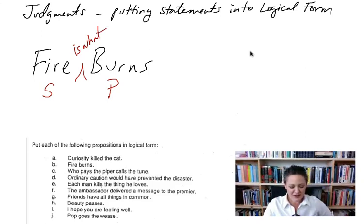Alright, so now you have a list here of other statements, propositions that don't have a copula. I would like you to do the same thing that I did and fill them in. Now there are some difficult ones. Let's look at these. Who pays the piper, calls the tune. You have to ask, is this talking about a person, a place, a thing? Ordinary caution would have prevented the disaster. Hmm. Is what? Is how? Each man kills the thing he loves. So I'm going to leave this open for you to fill in the copula.